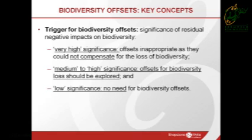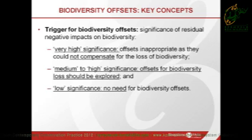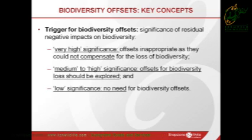In both the provincial guidelines that are available, they set the trigger for biodiversity offsets as the significance of the residual negative impacts on biodiversity. If you get very high significance, offsets are inappropriate as they could not compensate for the loss of biodiversity. In the medium to high significant range is where you'd look to explore offsets, and low significance essentially means there's no need for a biodiversity offset.